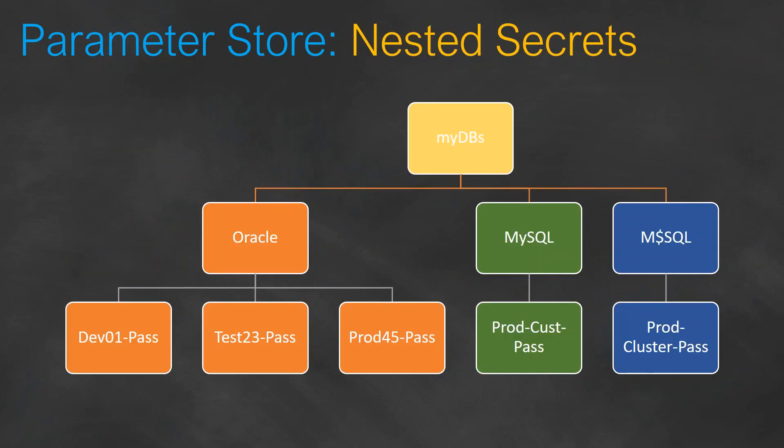There is also an interesting way to store values called nested keys. Your top-level key can be called 'my databases,' and under that you can have categories. For example, on the left-hand side there is an Oracle database, with parameters for dev01 password, test23 password, and production password. Similarly, MySQL and MS SQL databases and their passwords can also be stored in a nested structure, making it easy to access them in scripts by following the parameter hierarchy.